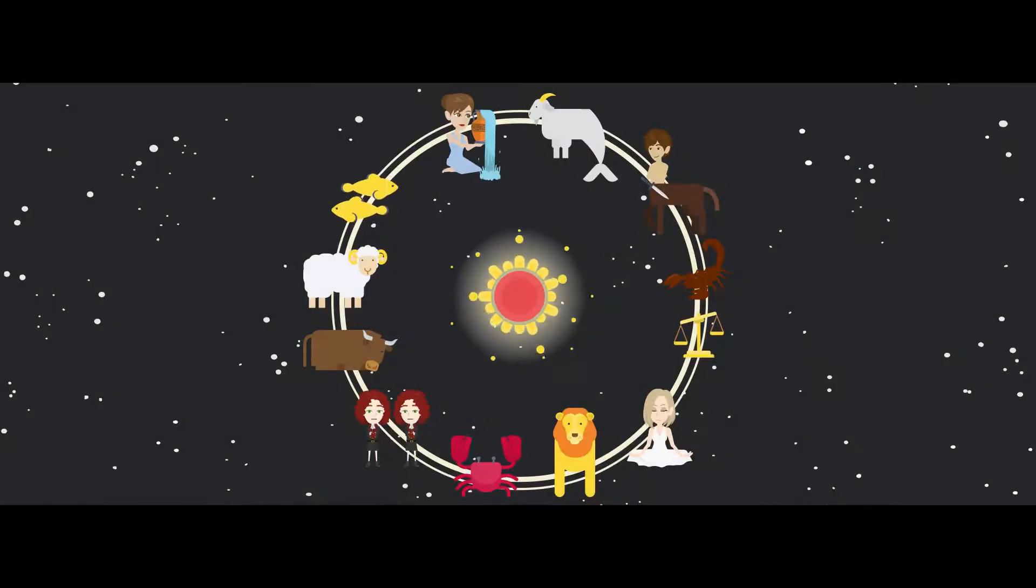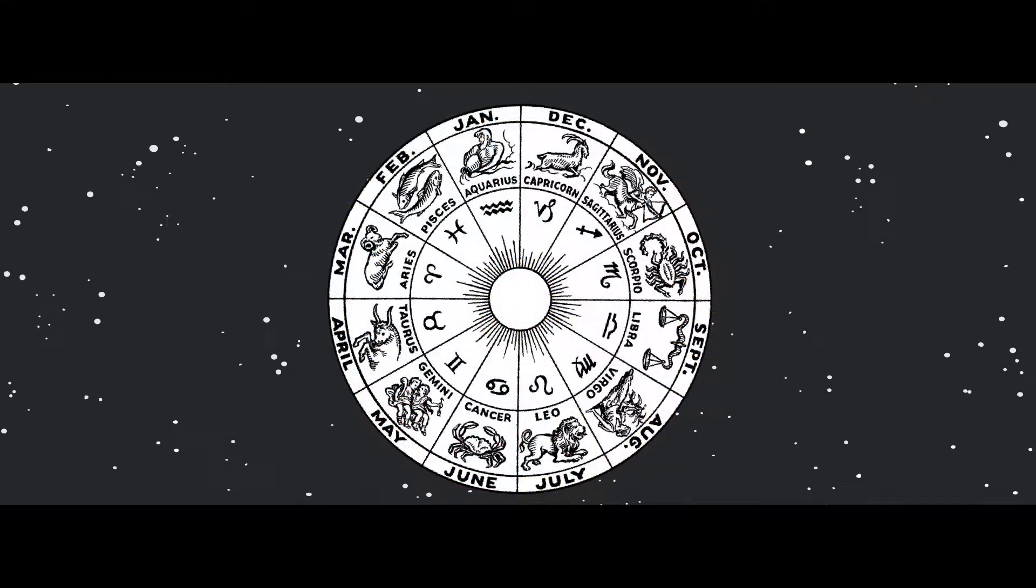The zodiacs, on the other hand, are conceptual representations based on the constellations, each occupying exactly one twelfth of the zodiac circle.